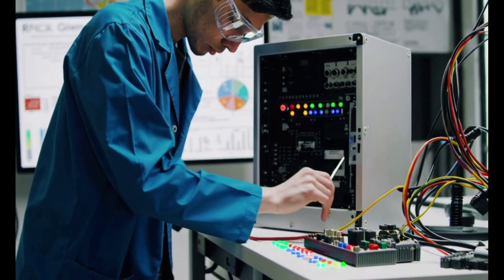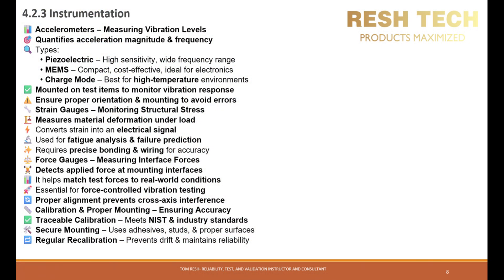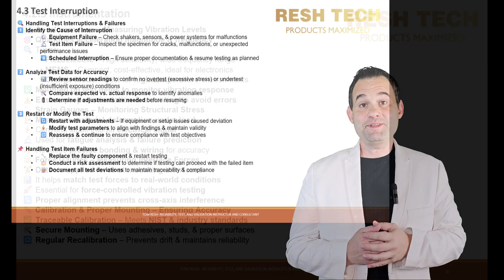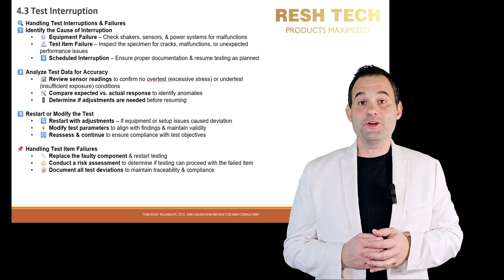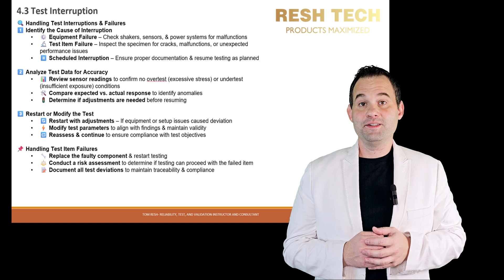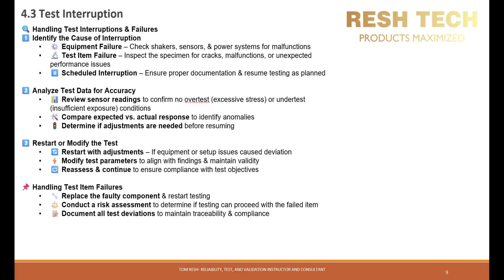All instruments should be traceable to national calibration standards and mounted correctly to avoid erroneous readings. Test interruptions can happen due to equipment malfunction, test item failure, or exceeding tolerances. Whenever we have a test interruption, we should follow these steps: first, determine the cause, such as equipment failure, test item failure, or scheduled interruption. Analyze data to ensure no over-test or under-test conditions occurred, and restart or modify the test based on findings.